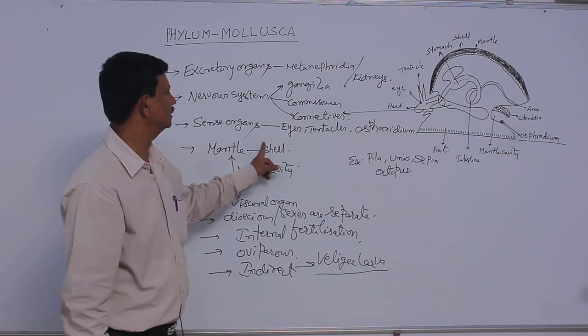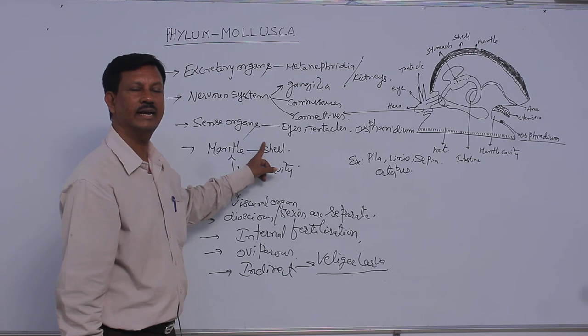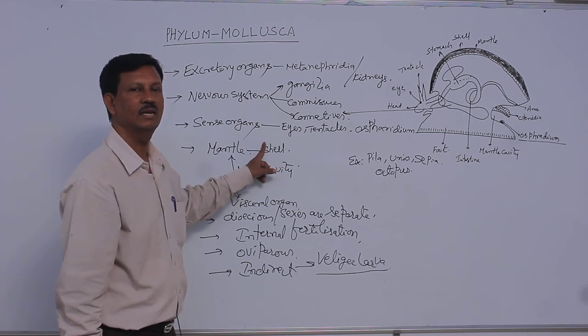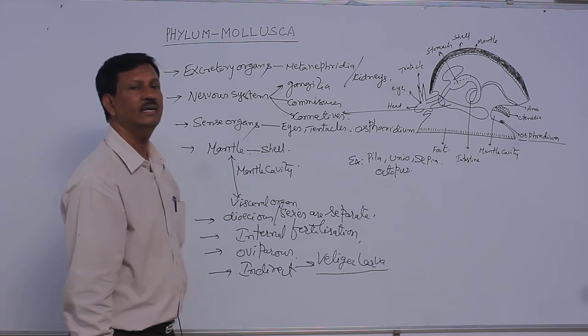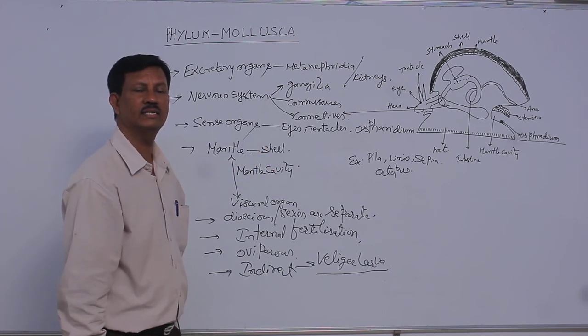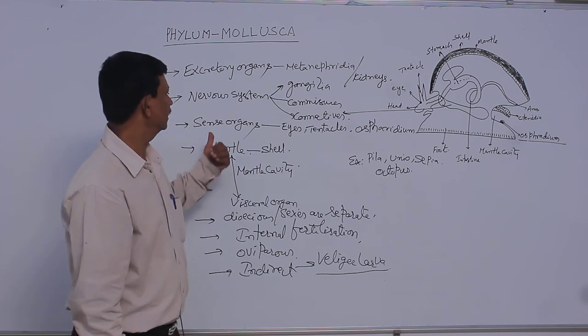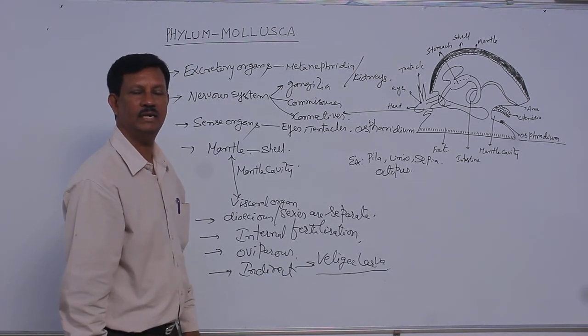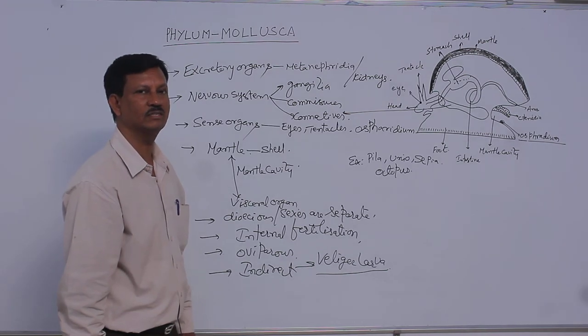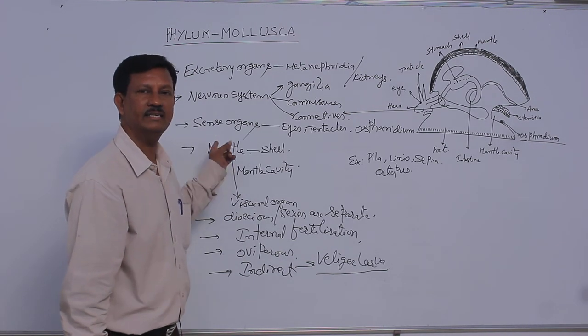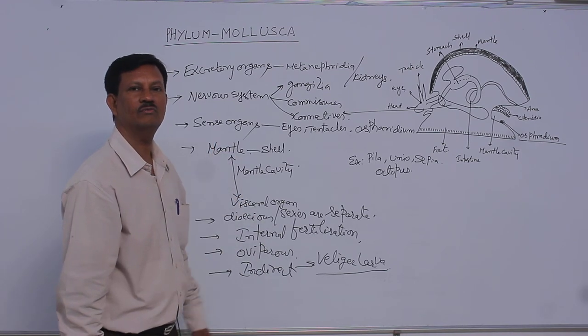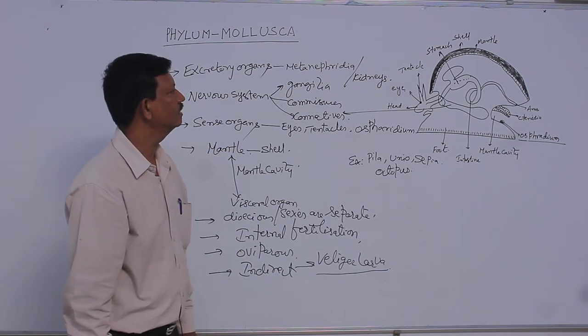Shell is present external or internal. Sometimes it is reduced, sometimes it is absent in some animals. Radula is the rasping organ present in the buccal cavity. Respiratory pigment is hemocyanin. Blood vascular system is open type. Excretory organs are nephridia. Sexes are separate and the larval form is known as the veliger larva.